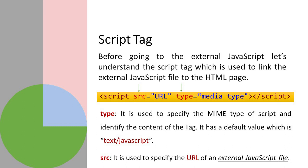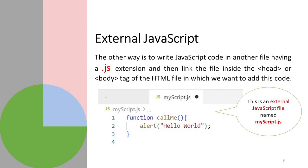The other way is to write JavaScript code in a separate file with a '.js' extension. We give the file a '.js' extension to make it a JavaScript file, then link the file inside the head or body tag of the HTML file. Here is an example: there is a file called 'myscript.js', and in that file there is a method called 'callMe'. The function keyword is a reserved word in JavaScript, 'callMe' is a customized function name, and the code inside is 'alert("Hello World")'. This is an external JavaScript file named 'myscript.js'.